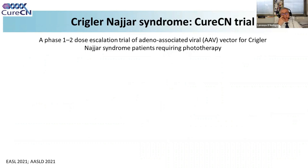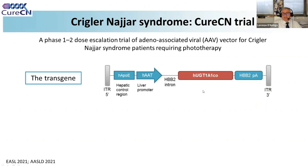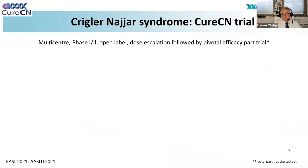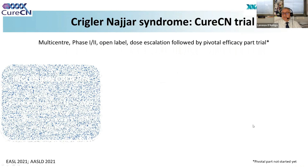To finish my presentation, I will show the preliminary data of our trial, the QRCN trial — six months of follow-up data already disclosed and presented at the EASL and ASLD meetings. The follow-up is now much longer but remains unpublished. The transgene cassette contains UGT1A1 with an alpha-1 antitrypsin promoter, which is liver-specific. We have a baseline, then cohort one with a lower dose and cohort two with a higher dose. We choose the best dose according to safety and efficacy and will proceed with a pivotal trial. We have now completed cohorts one and two and are about to start the pivotal group.